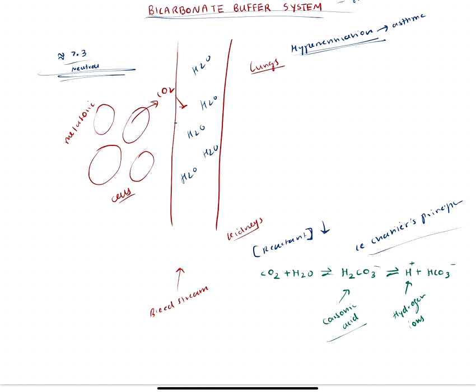As Le Chatelier's principle states, if you increase the concentration of either the products or the reactants, then the equilibrium reaction will shift in the other direction. In this case we are decreasing the number of reactants, the concentration of reactants.